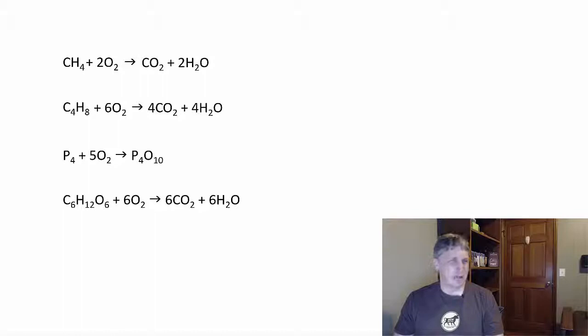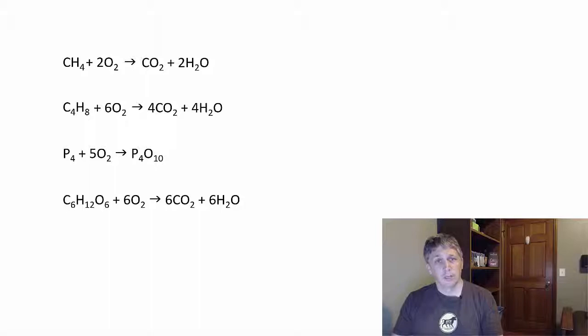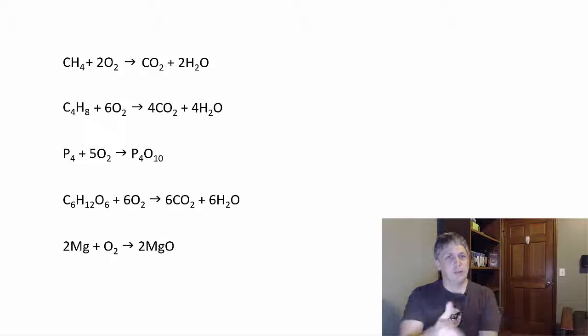With metals, when they undergo combustion pretty much the same thing happens. It'll combine with oxygen to give you its metal oxide. For example, those sparklers that you sometimes use for holidays like the Fourth of July here in the States, that's mainly just ground up magnesium made into some corn dog looking thing. That'll burn to give you magnesium oxide as its product. So notice in all of these cases it's just each element in that compound combining with oxygen to give you its main oxide.